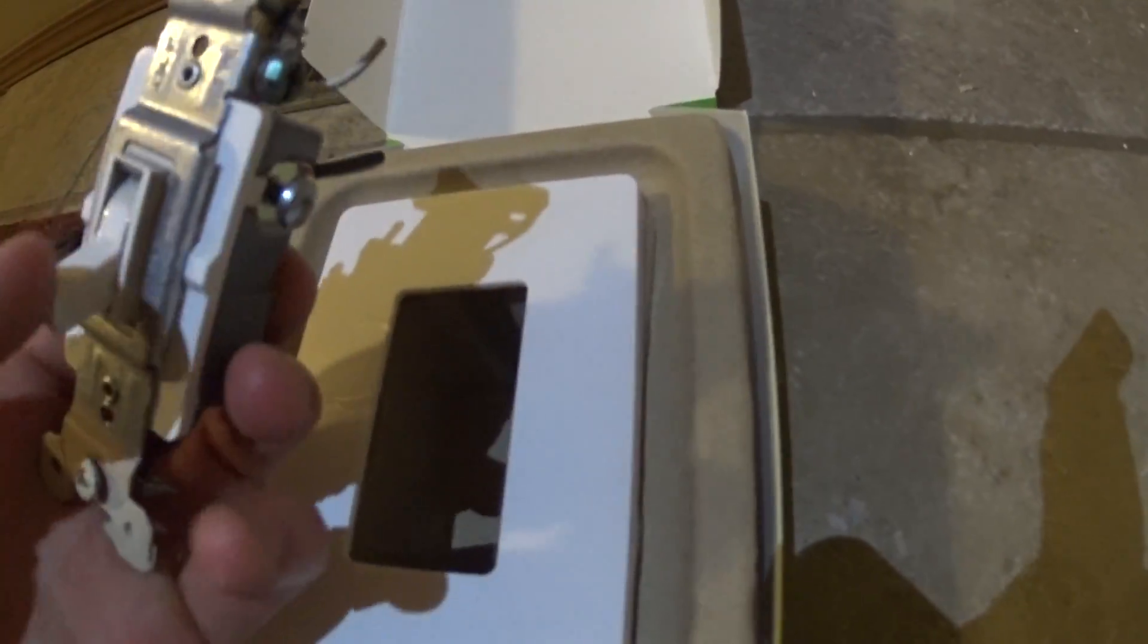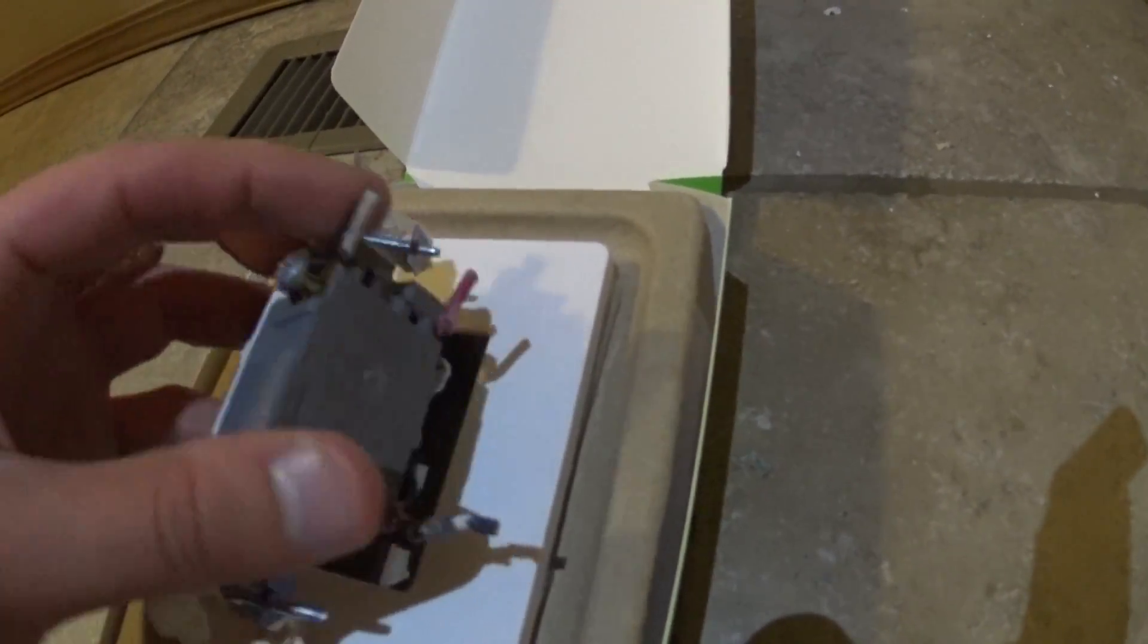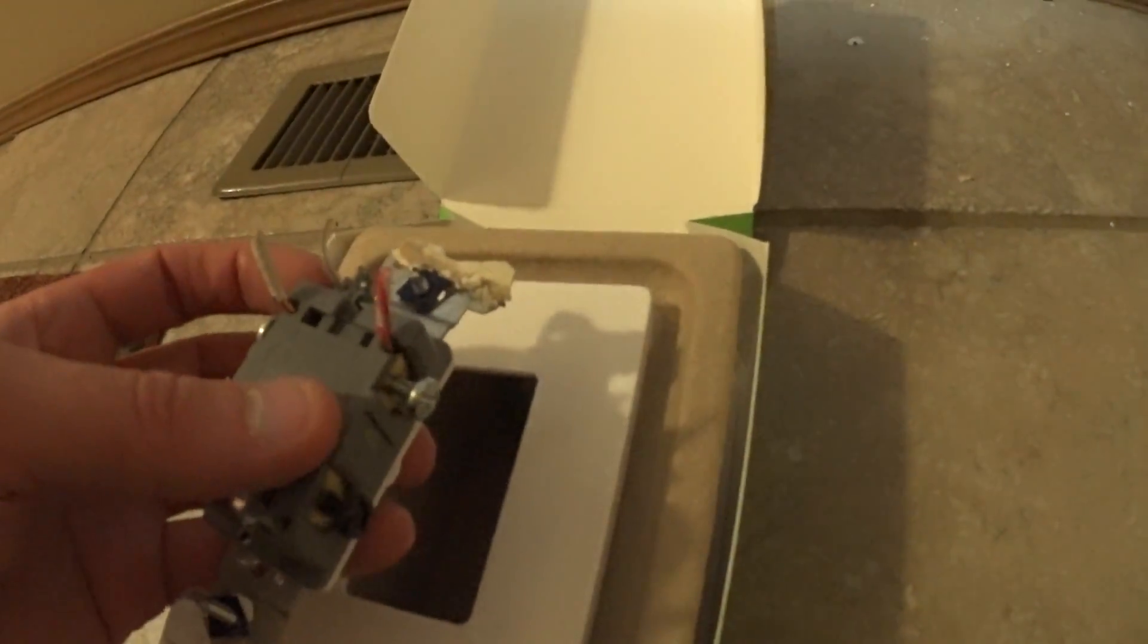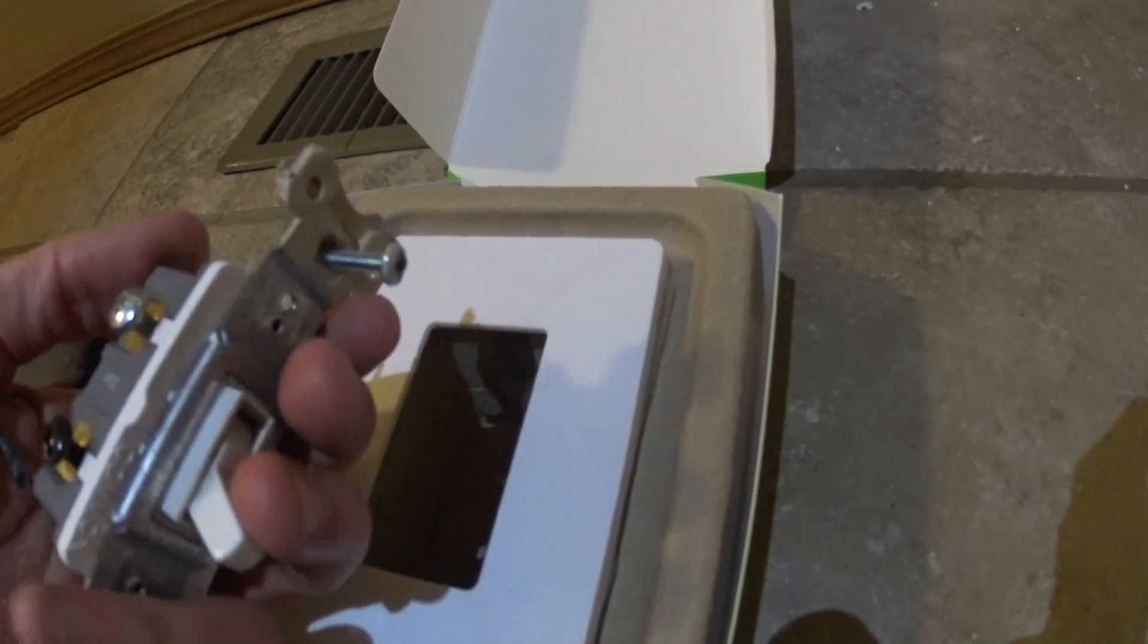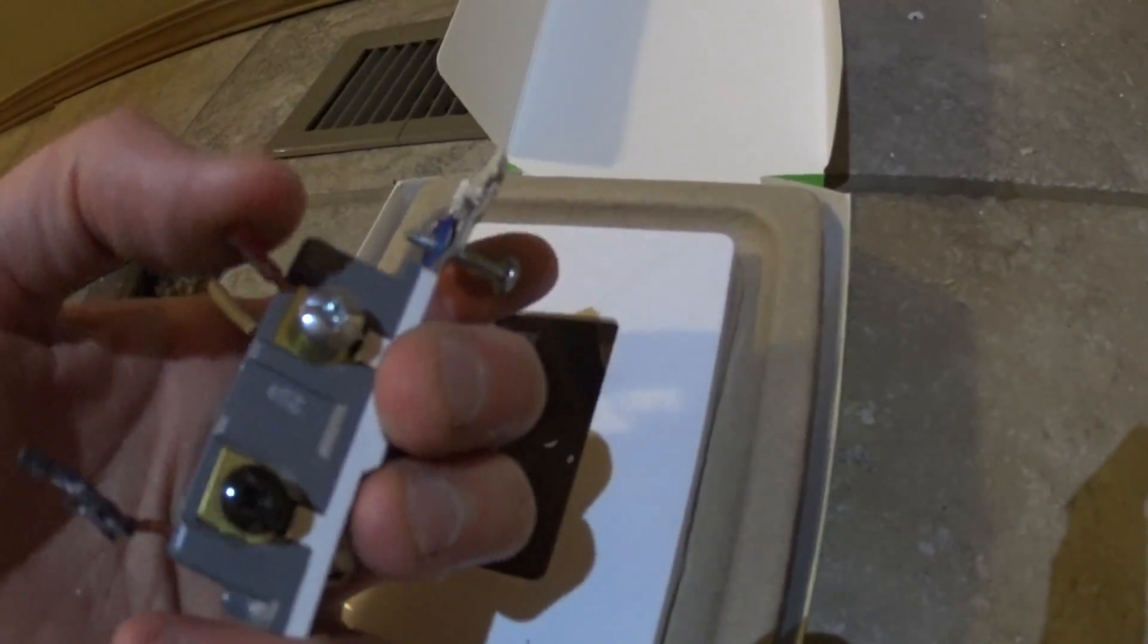So the other switch is basically the same thing where the other half of the hot is over there. So whenever you flip this switch, in my case down is the black traveler wire, actually down is the red traveler wire on the other switch.